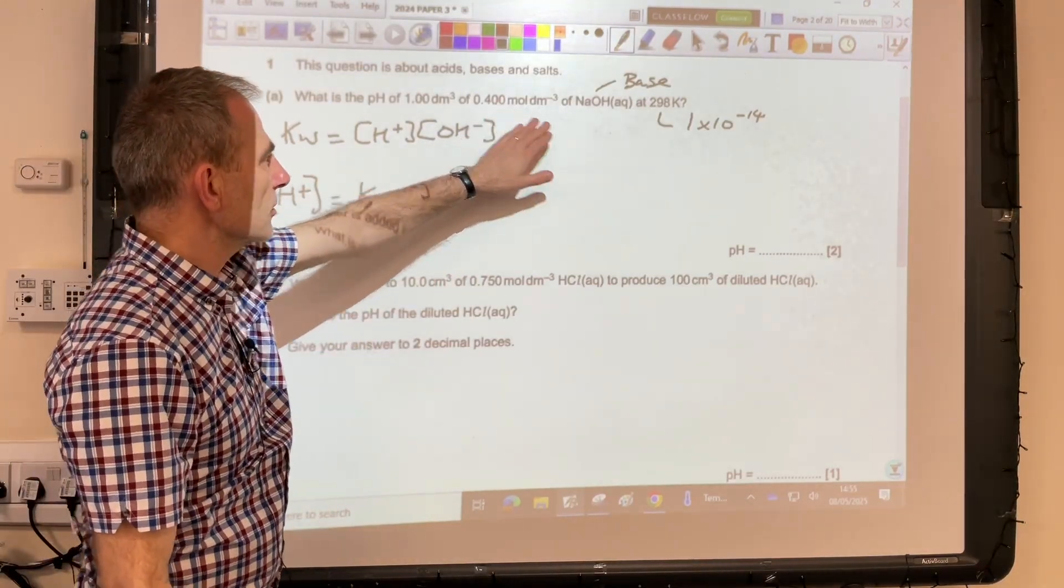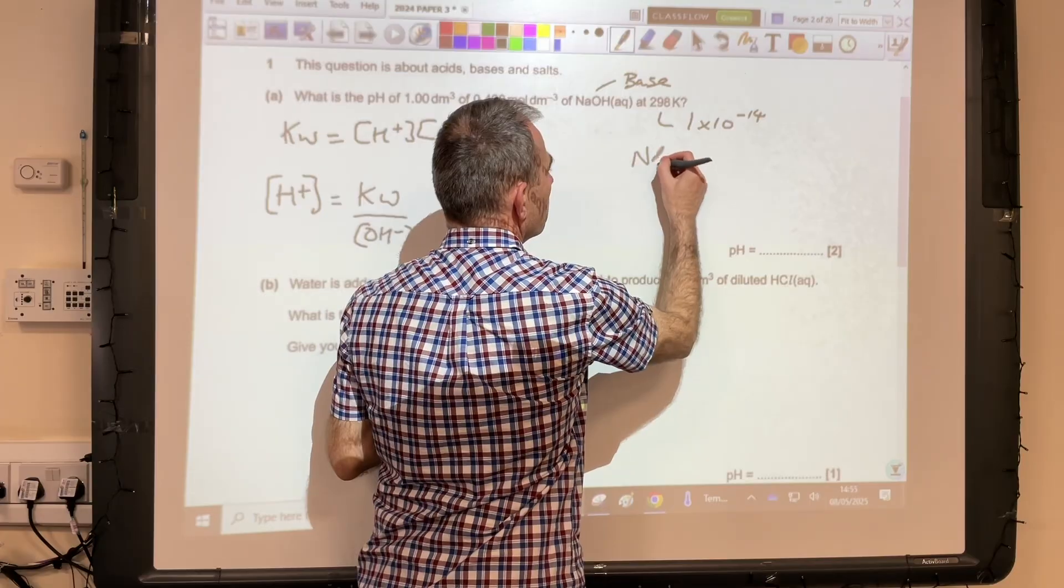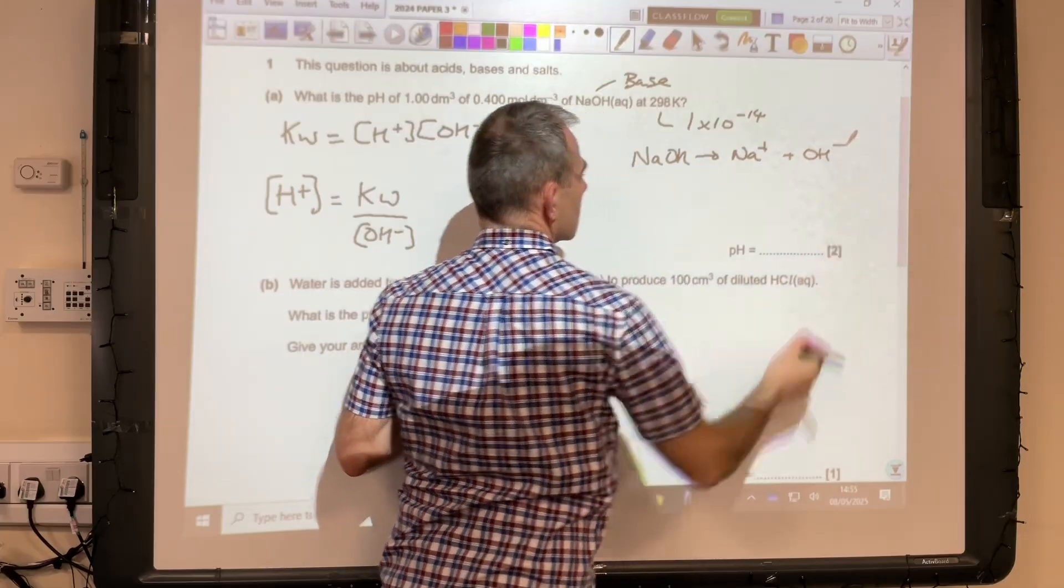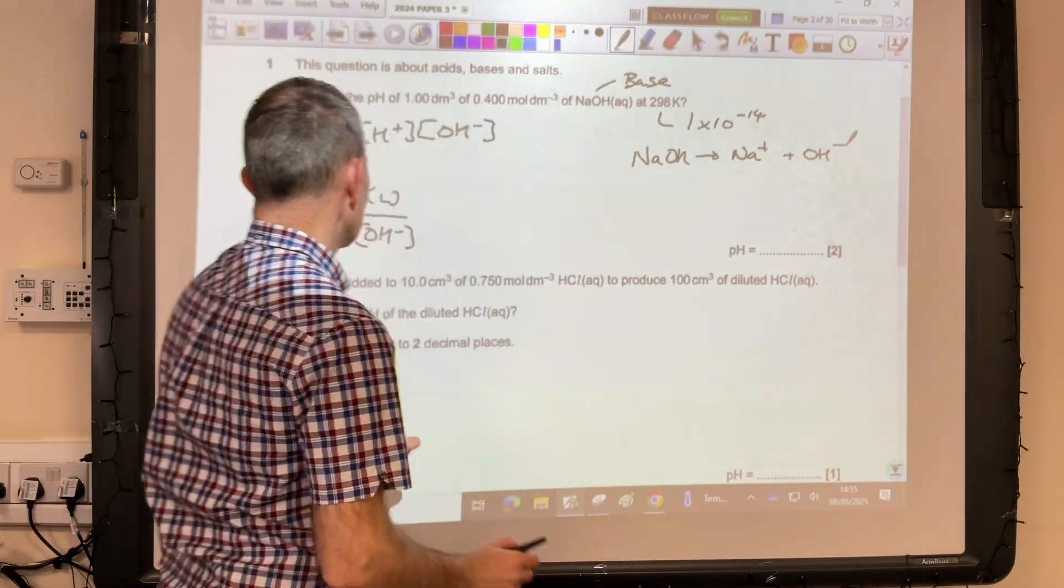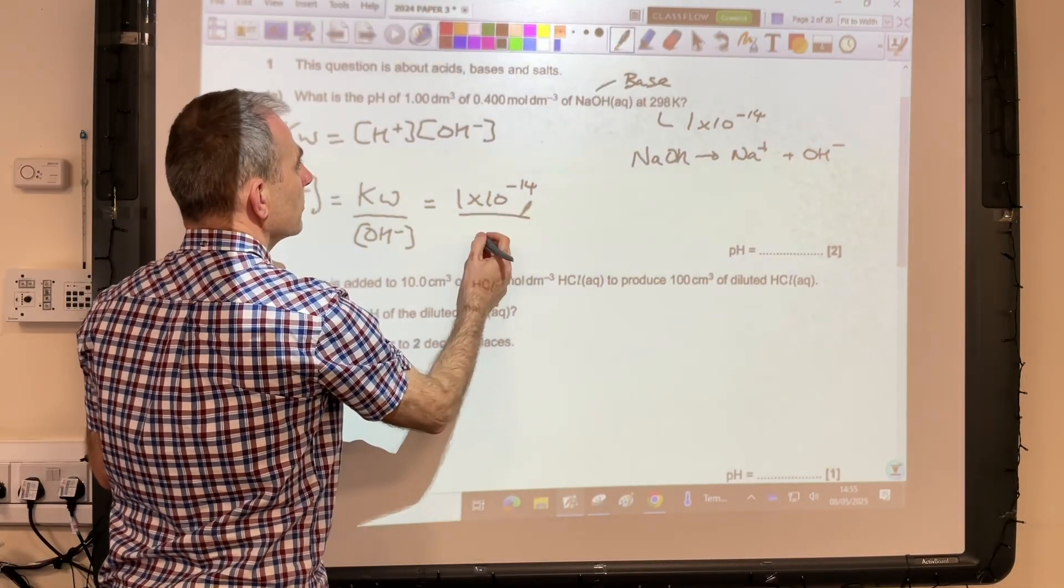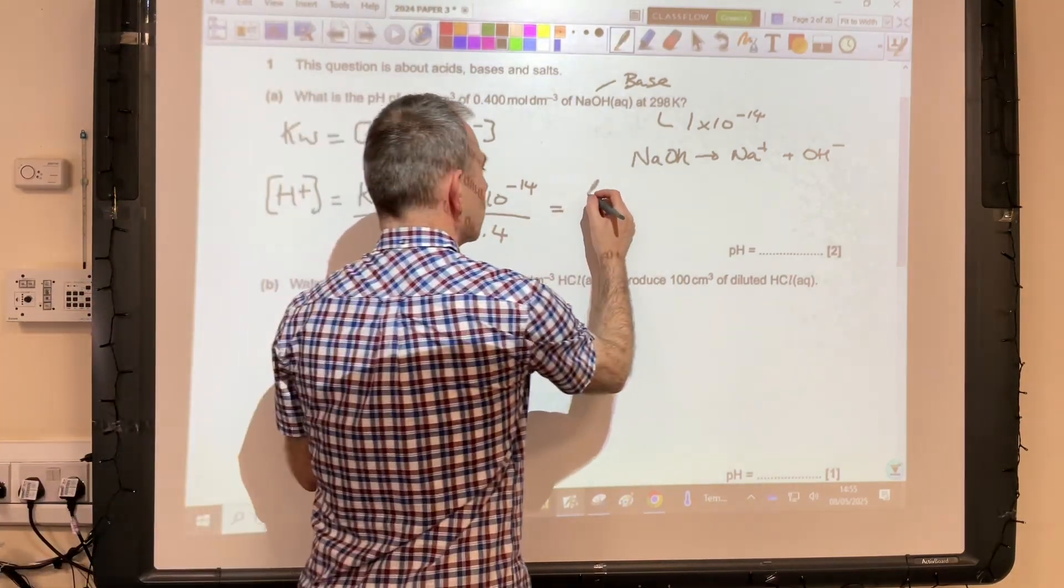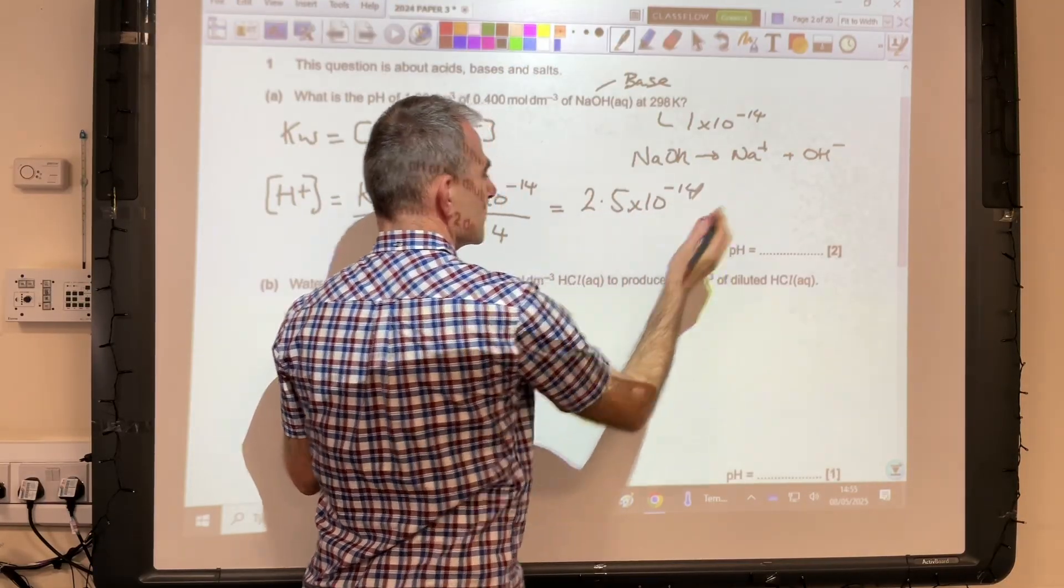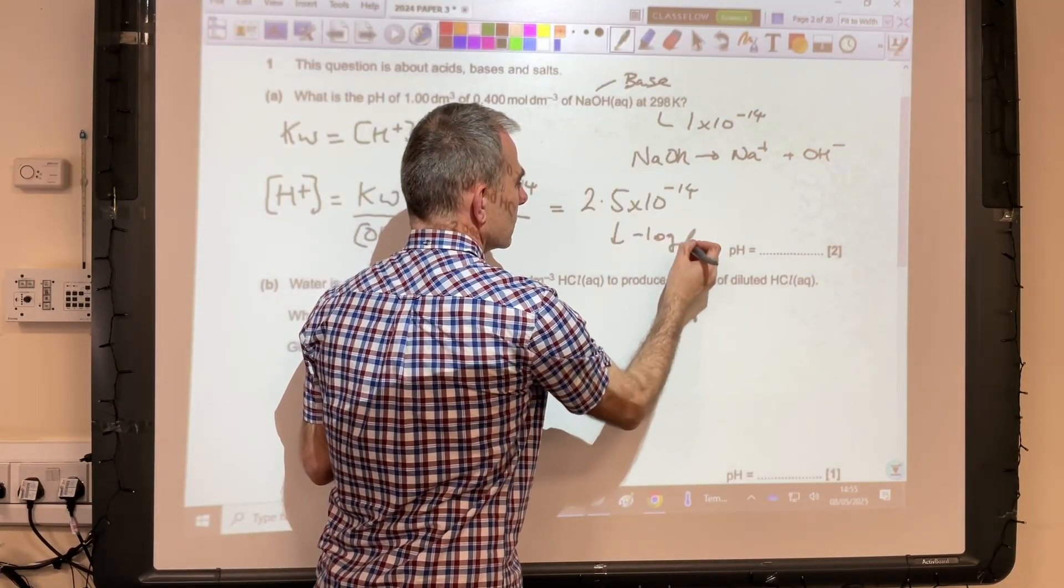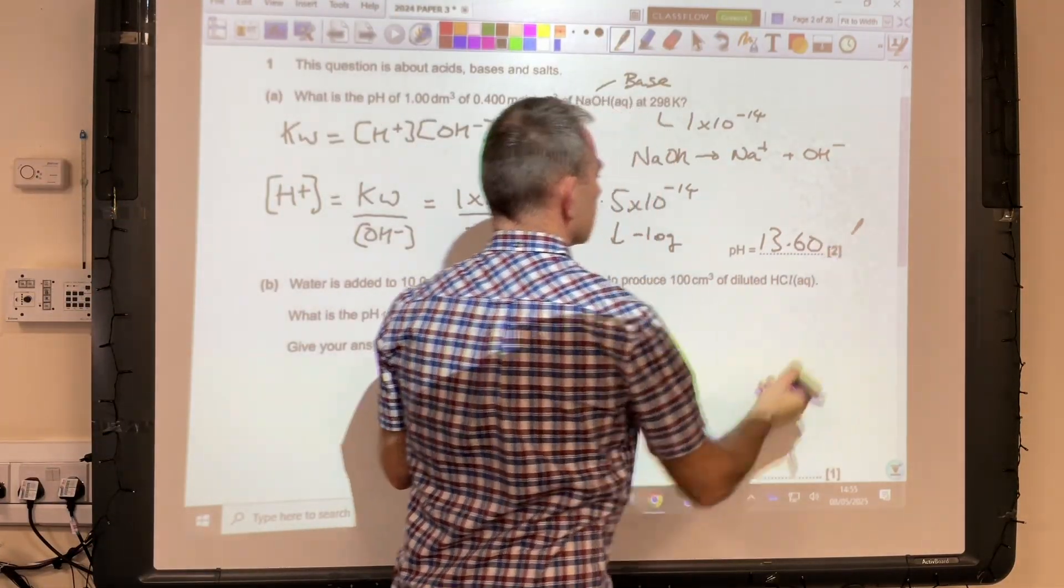What do we know? We know that the concentration of the sodium hydroxide solution—sodium hydroxide is a strong alkali, so it fully dissociates in solution. We get Na⁺ and OH⁻, so if that's 0.4, then so is that. We've got all the numbers we need: 1×10⁻¹⁴ divided by 0.4 gives a value of 2.5×10⁻¹⁴ mol/dm³. How do we turn that into a pH? We minus log that, and the pH comes out at 13.60.